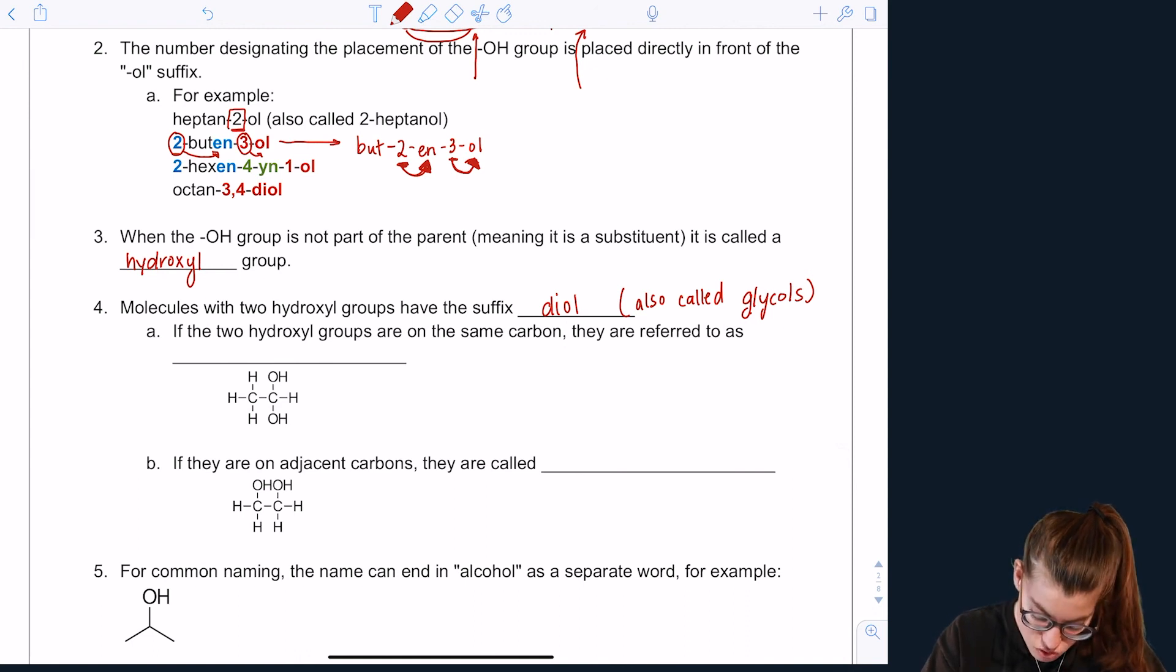If the two hydroxyl groups are on the same carbon, like this example right here, see how my two OH groups are on the same carbon? Then they're referred to as geminal diols. And if they're on adjacent carbons, like these two are, so here's one, here's the other one. They're on neighboring carbons. They're called vicinal diols.